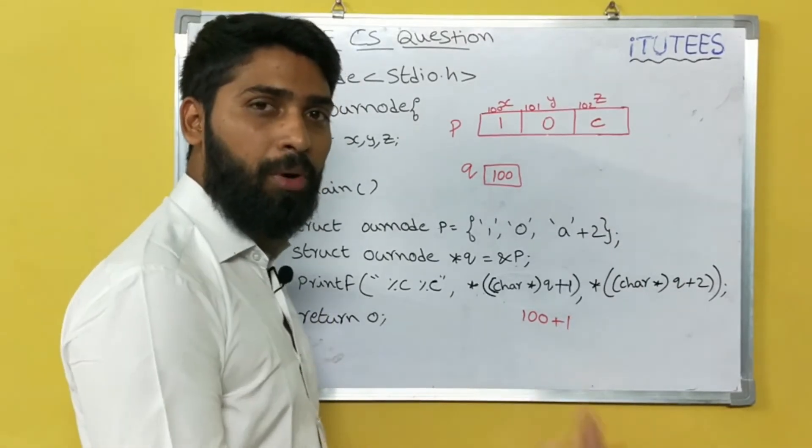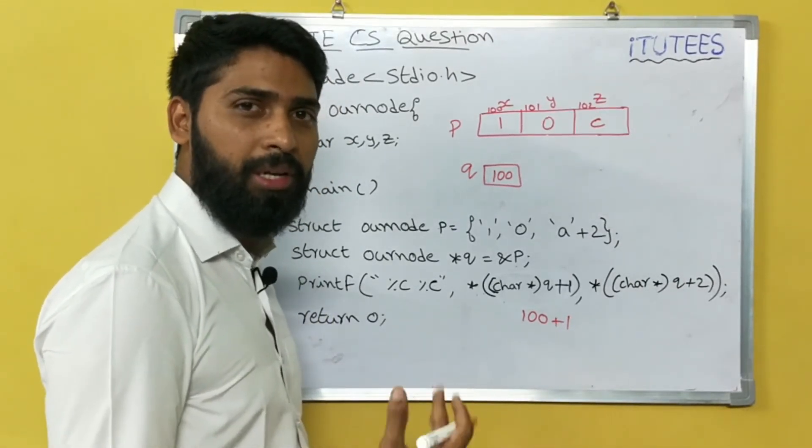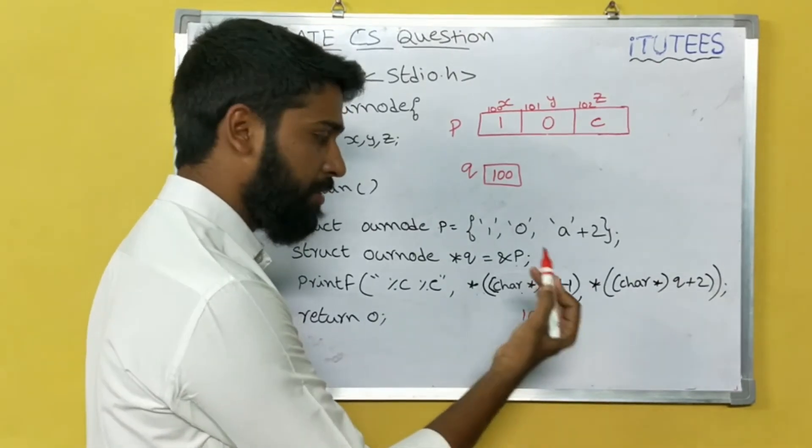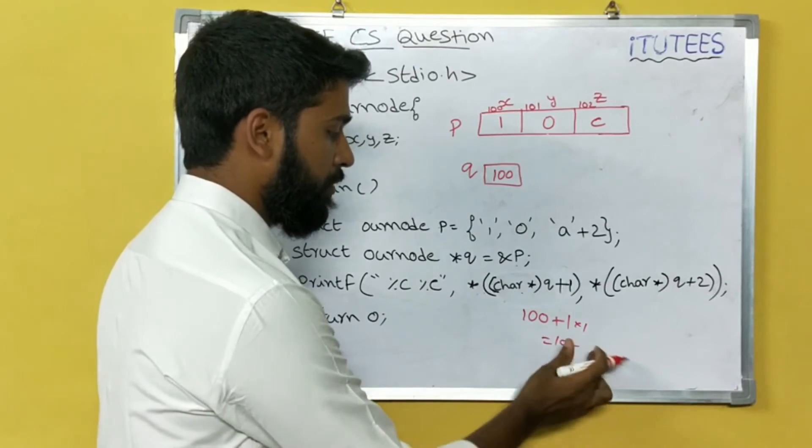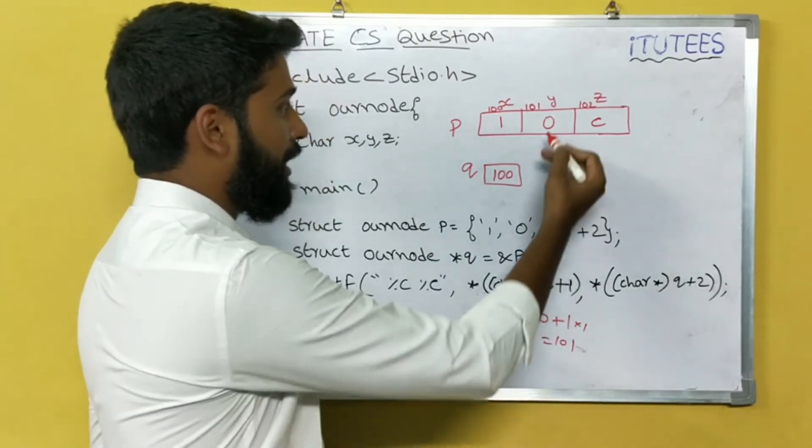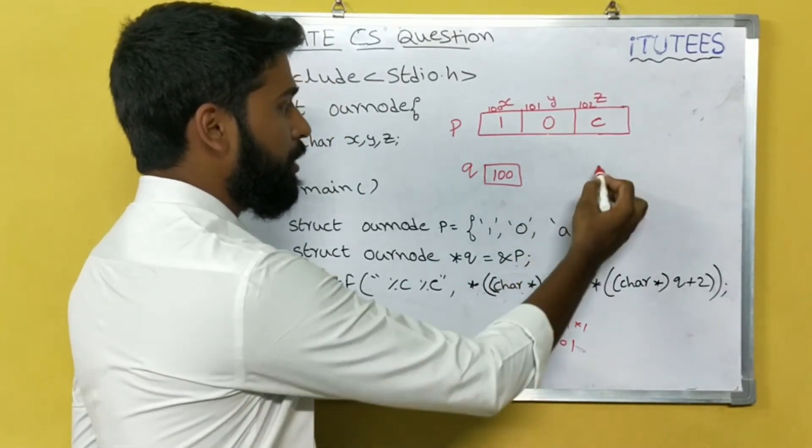100 plus 1. Here, pointer arithmetic incremented by size. What is the size of char here? 1. So 1 times 1 equals to 1. 101. What is the content in 101? 0. That is printed.